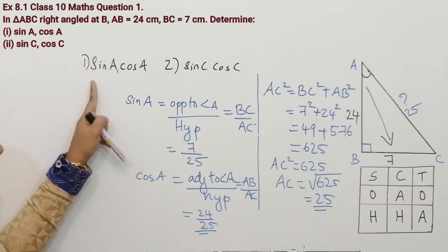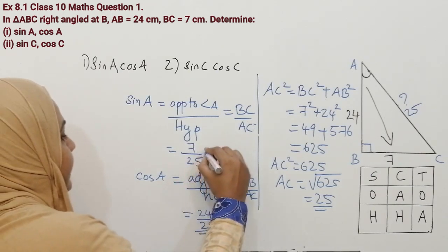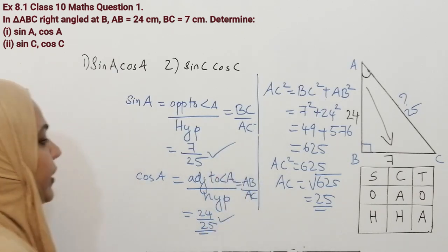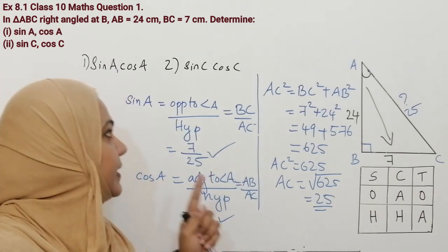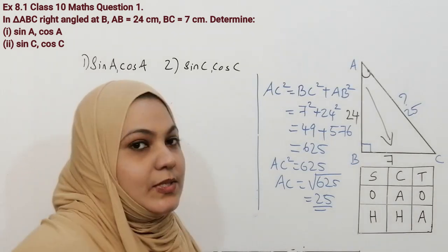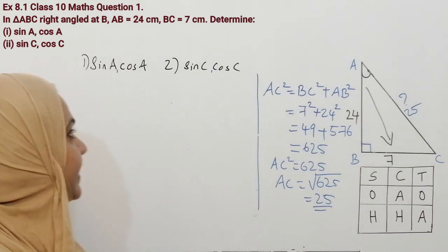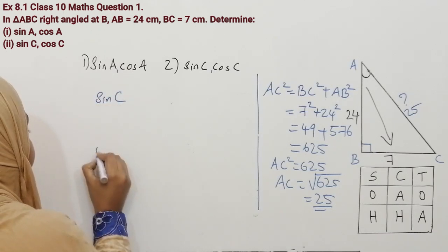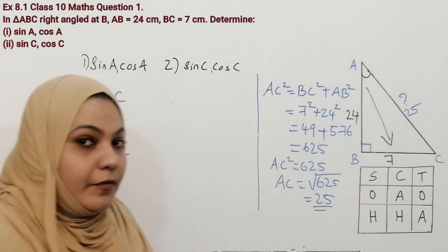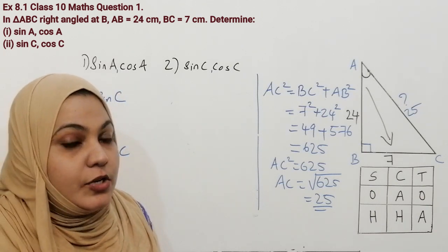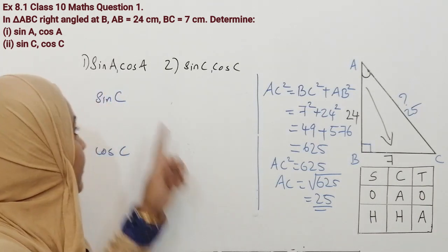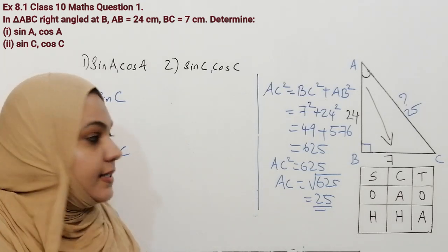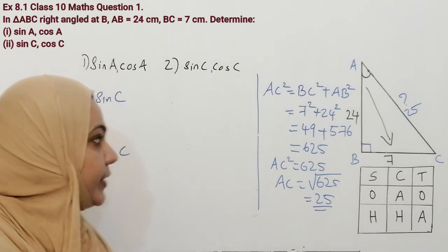We got the values: sin A is 7 by 25 and cos A is equal to 24 by 25. Now let us do the second part of this question — sin C and cos C. As I said before, while choosing the reference angle you should be very careful. In the first question the reference angle was A, but in this question the reference angle is C. I am drawing another triangle to avoid confusion.